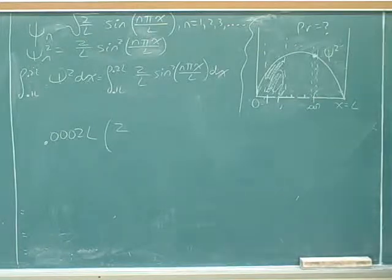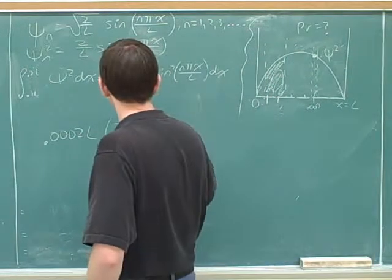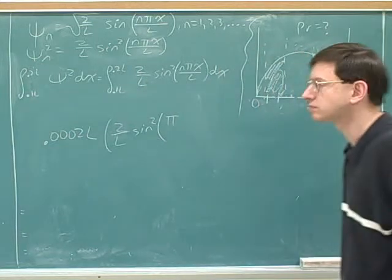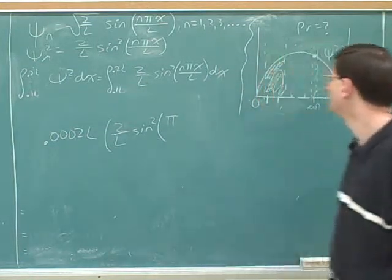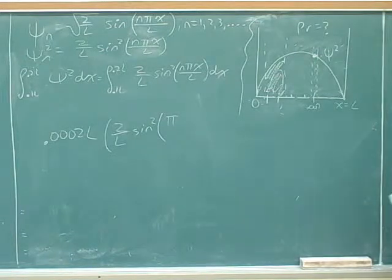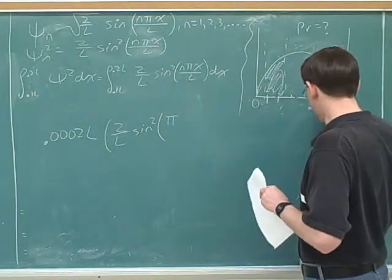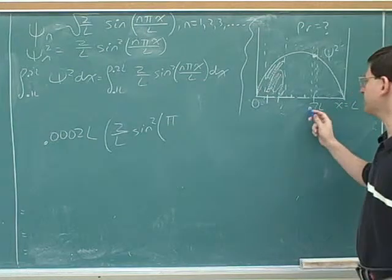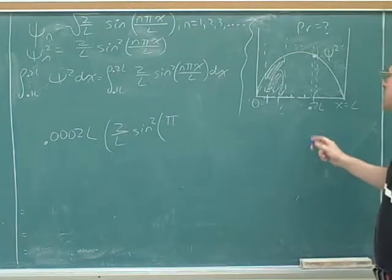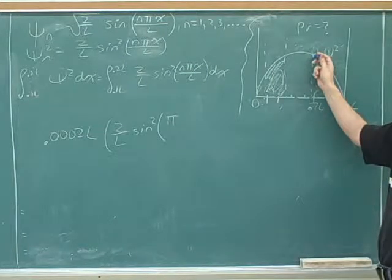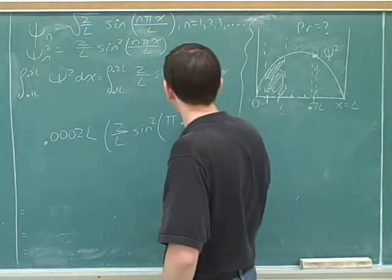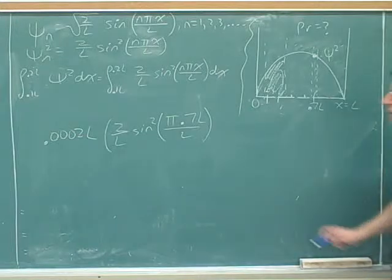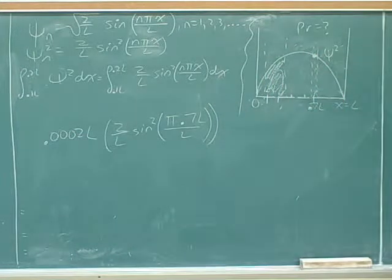What are we going to plug in? 2/L times sine-squared(π × x/L), where n equals 1. And x is 0.7L. We're really going from a little bit less than 0.7L to a little bit above 0.7L, but this is such a small window that the height is pretty much the same everywhere. So we can just plug in the midpoint, which is 0.7L over L. We can use length times width to find this little rectangle — we don't need complicated integration because the height isn't really changing over such a small rectangle.